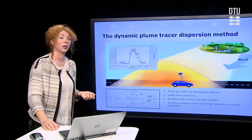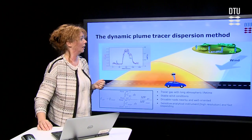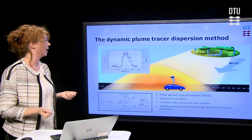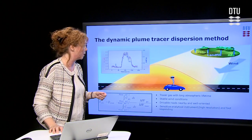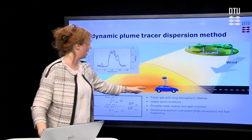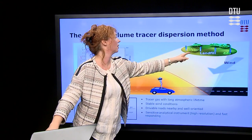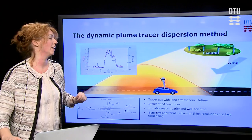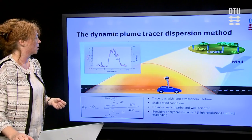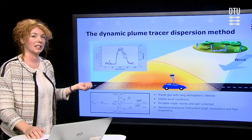At DTU Environment, we work with an alternative measuring method. We call it the Dynamic Plume Tracer Dispersion Method. This method measures the whole emission from your site. It is based on a combination of a tracer gas release on your source with downwind plume measurements of your tracer gas and of the gas that you want to quantify — so if it's from a landfill, that could be methane. You obtain the methane emission by using the ratio between the tracer gas and the methane.